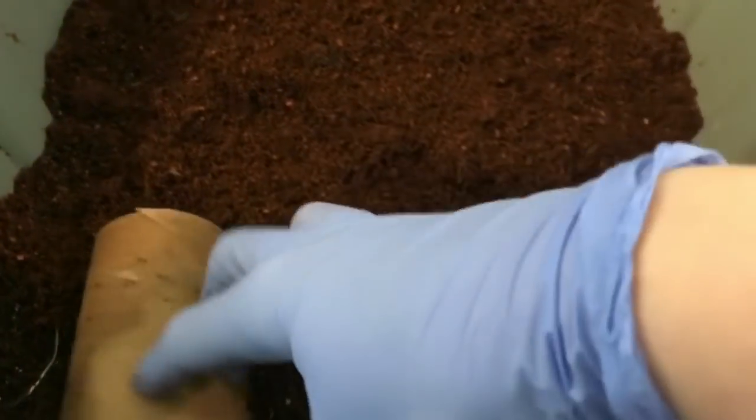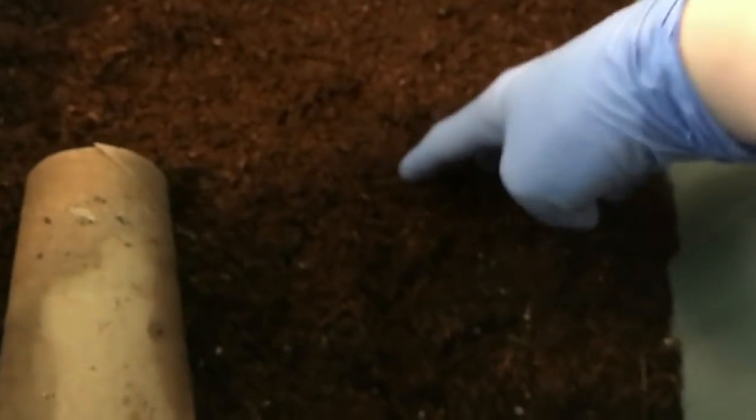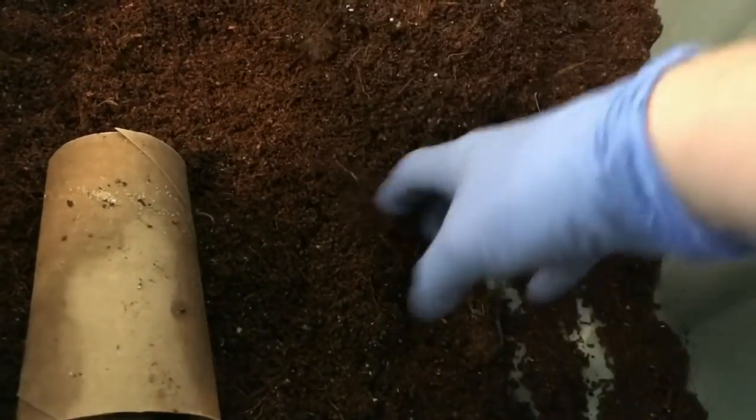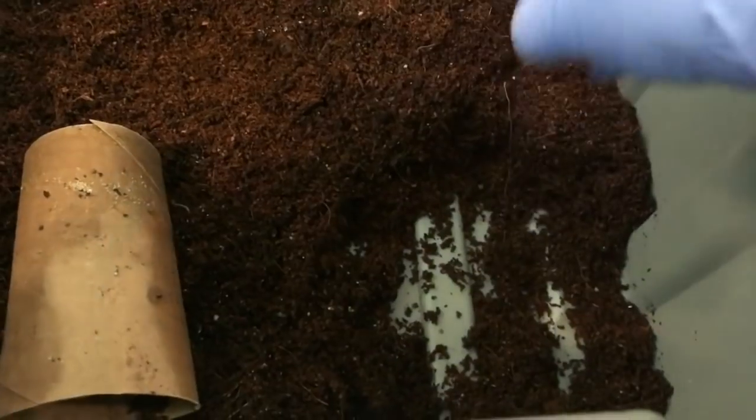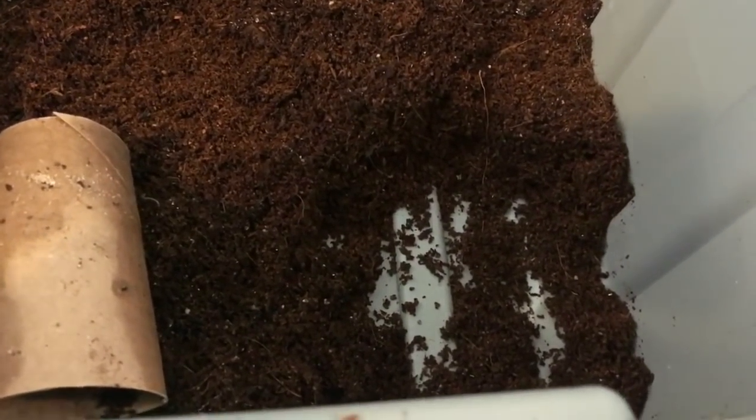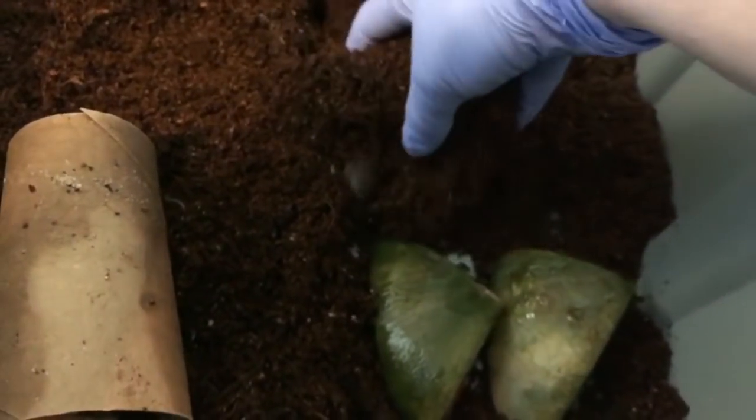And since we fed down here I figured we'd go to the other corner. So I'm just gonna clear this out. This is the eggshell bin. And I think we can really get them going with some watermelon. So that's almost four ounces but it is very water rich.